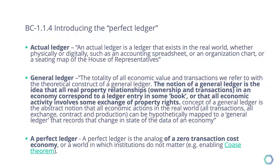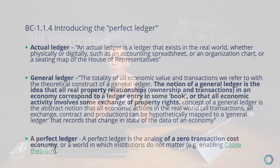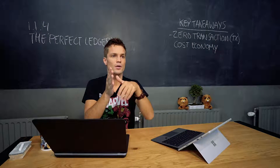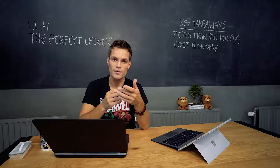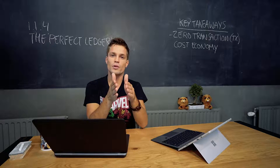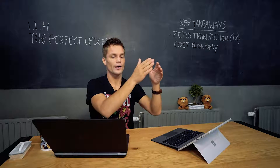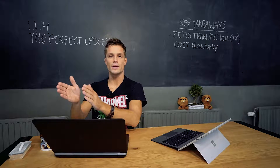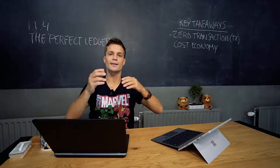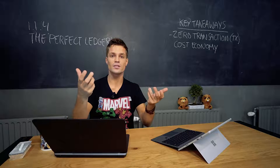The bottom line is that a perfect ledger has no transaction costs. So what does this mean? Basically, no friction, no wall, no slow motion, nothing that you need to pay — no cost between transferring value from person A to person B. It should be instant.